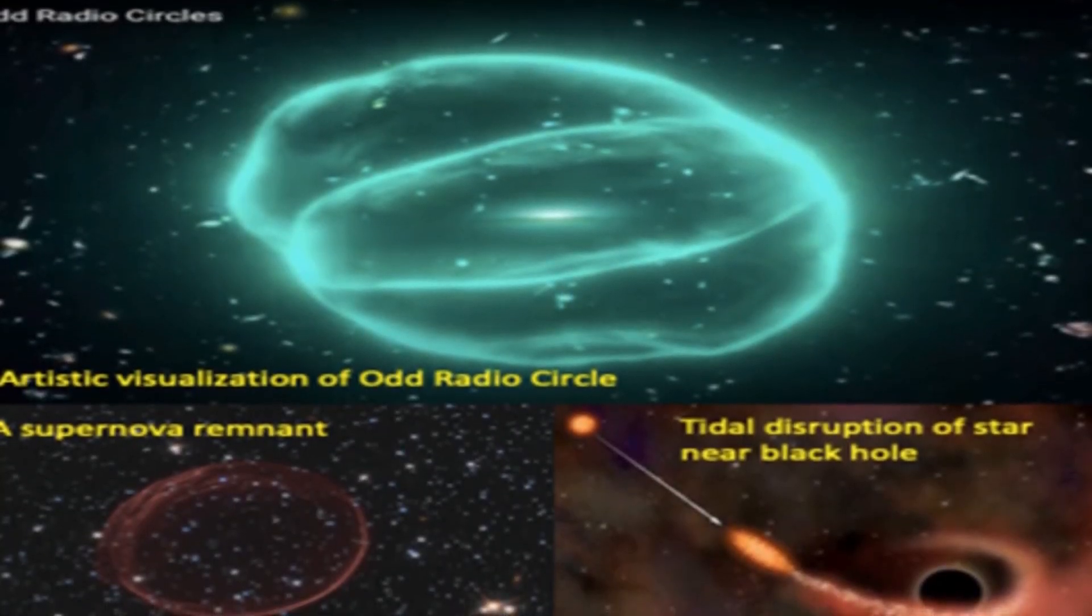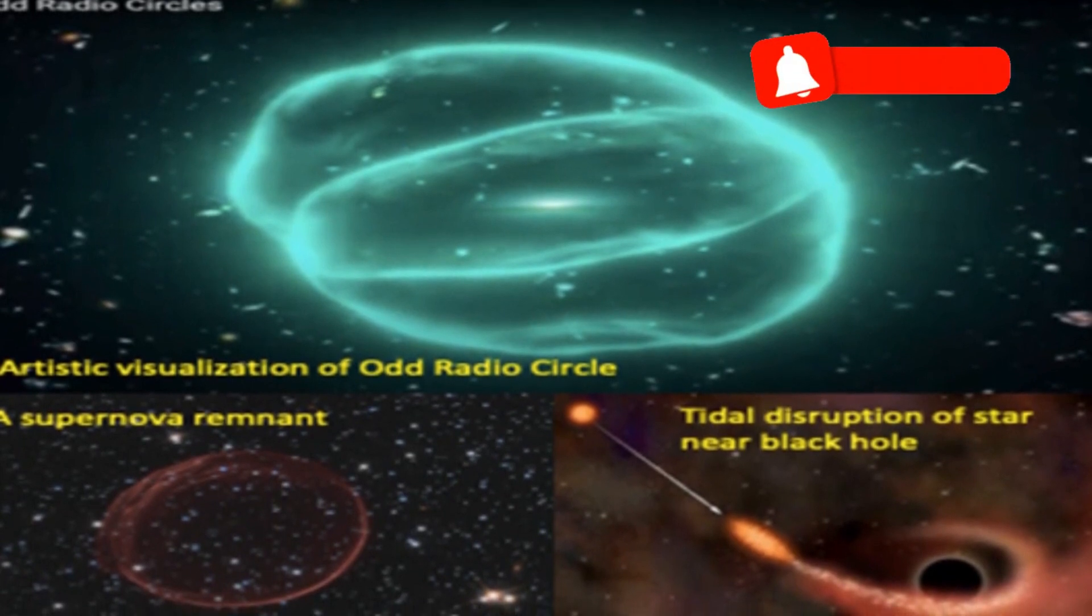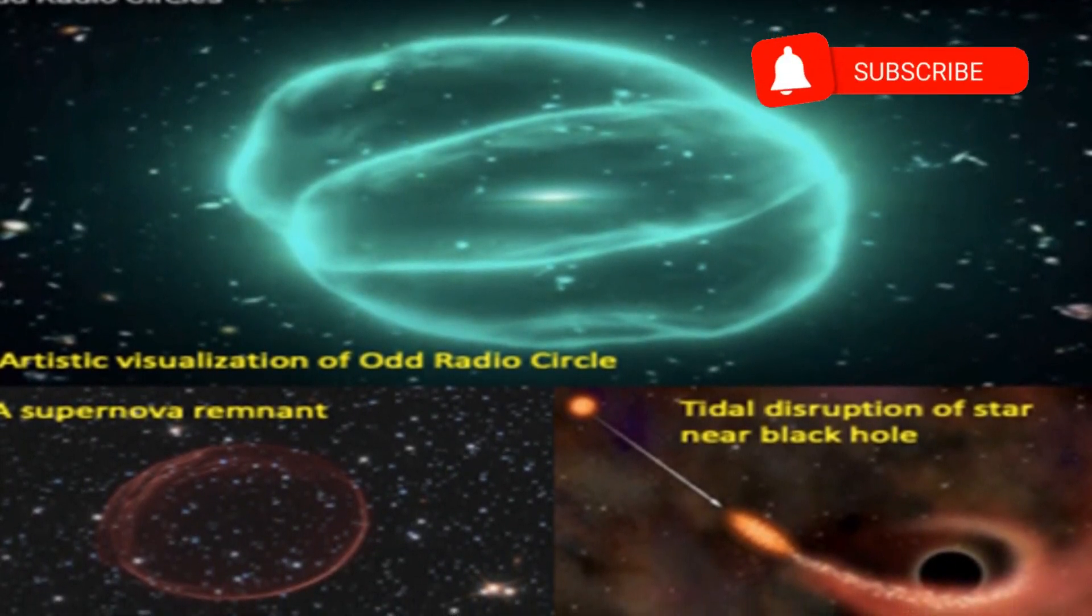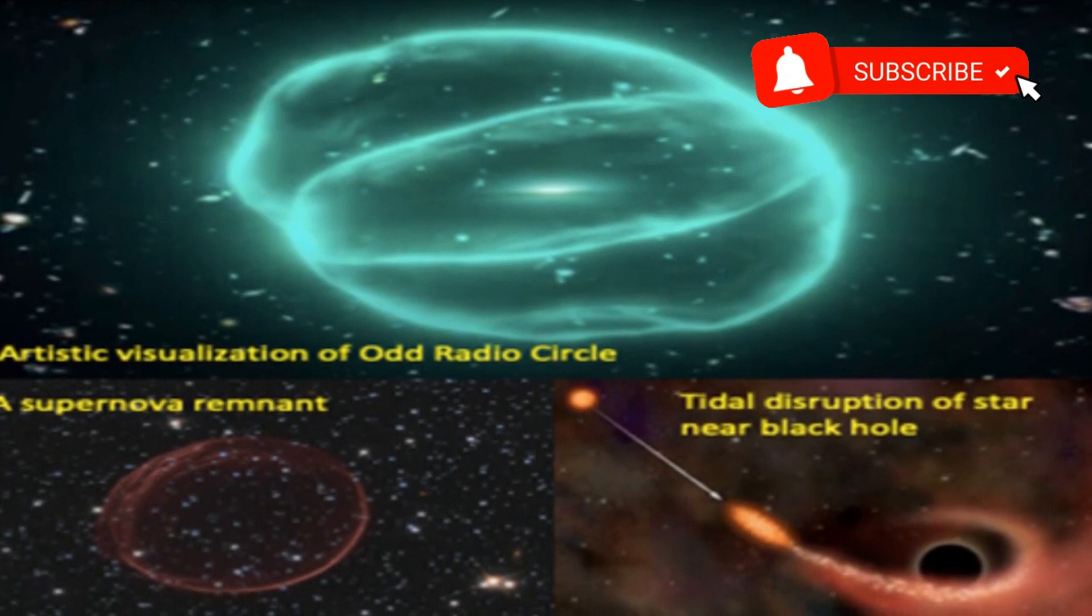The resulting massive stars expel gas as outflowing winds, creating powerful spherical outflows and shock fronts when interacting with the intergalactic medium.